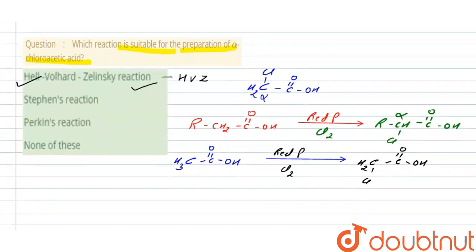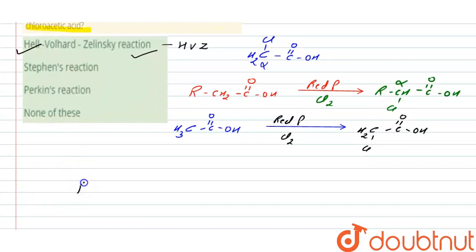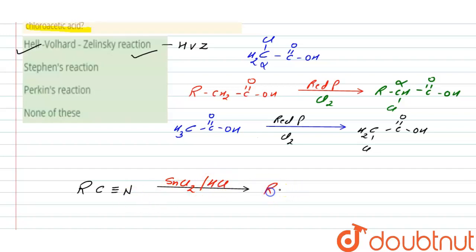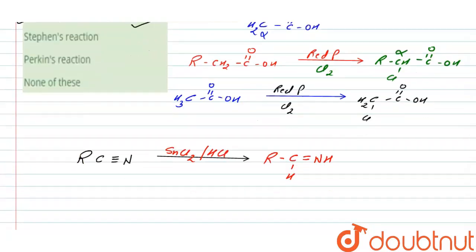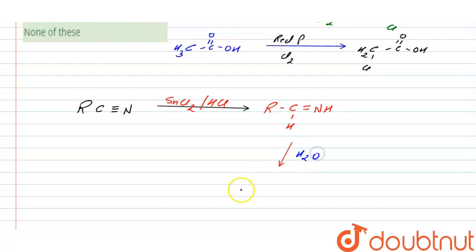In option B, we have Stephen's reaction. In Stephen's reaction, a nitrile (RC≡N) is treated in the presence of SnCl2 and HCl. The product obtained after hydrolysis with H2O is an aldehyde (RCHO). So Stephen's reaction gives an aldehyde from a cyanide, and is not related to alpha-chloroacetic acid — therefore option B is incorrect.